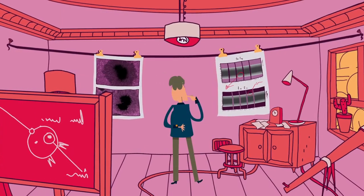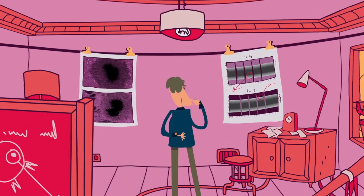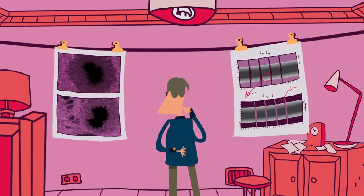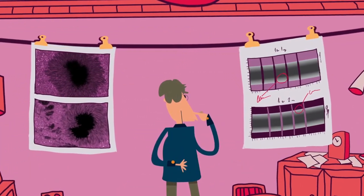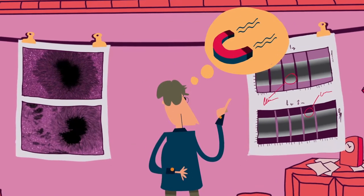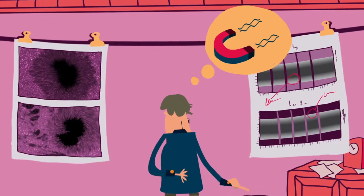Hale osservò righe spettrali doppie nelle macchie solari, come quelle prodotte in laboratorio da forti campi magnetici. Egli scoprì nel 1908 che le macchie hanno intensi campi magnetici.